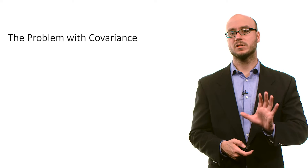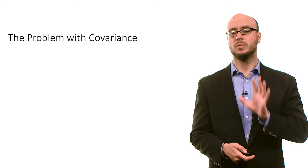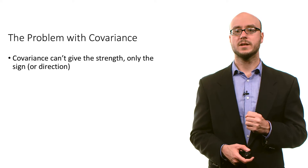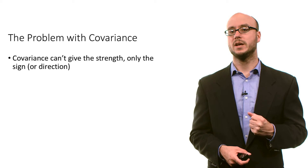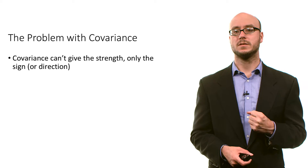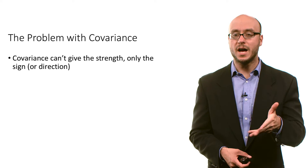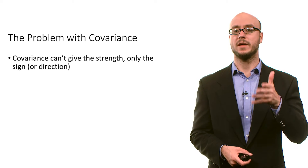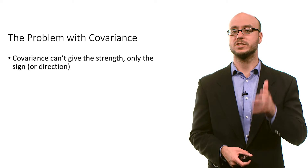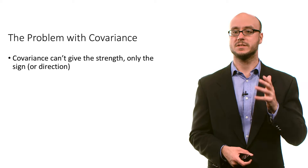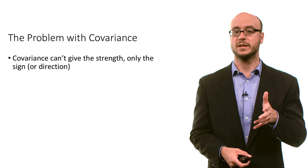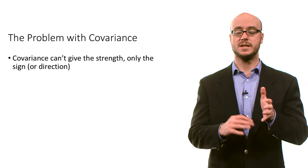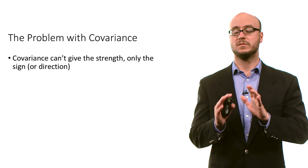However, there's a problem with covariance. Covariance can only give us the sign, or the direction — it cannot give us the size or the strength. So covariance tells us it's positive, negative, or zero.